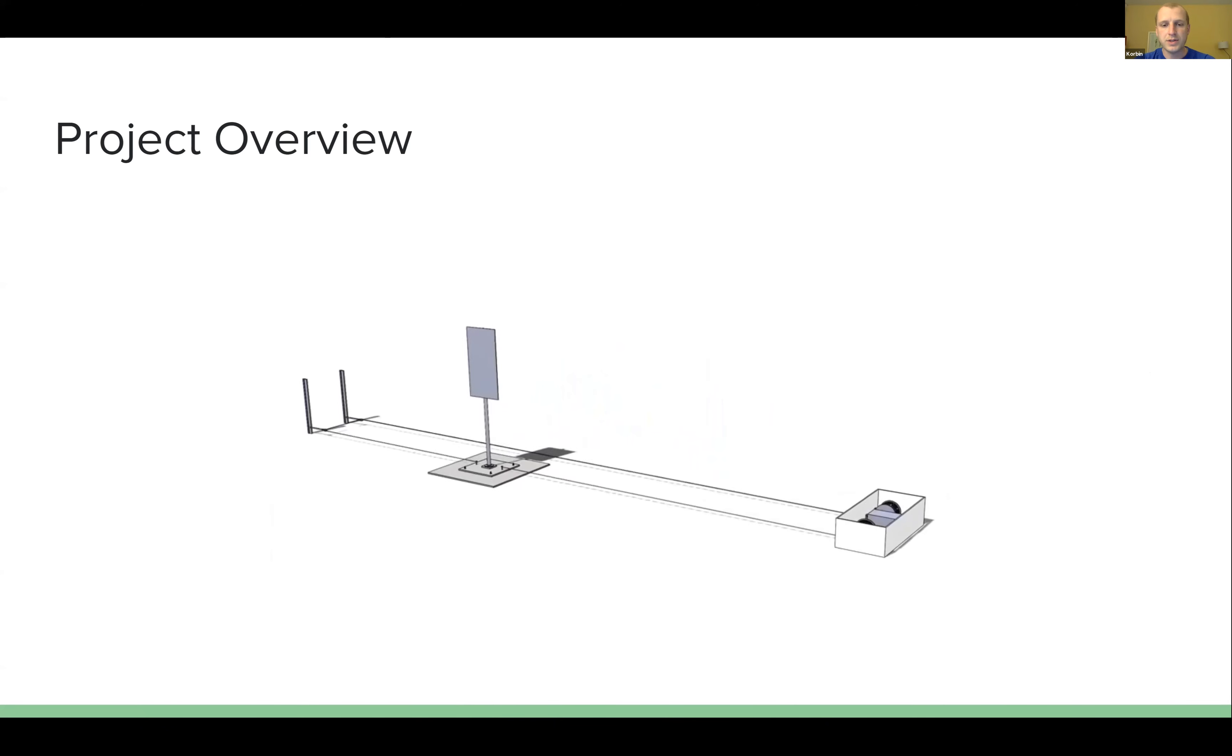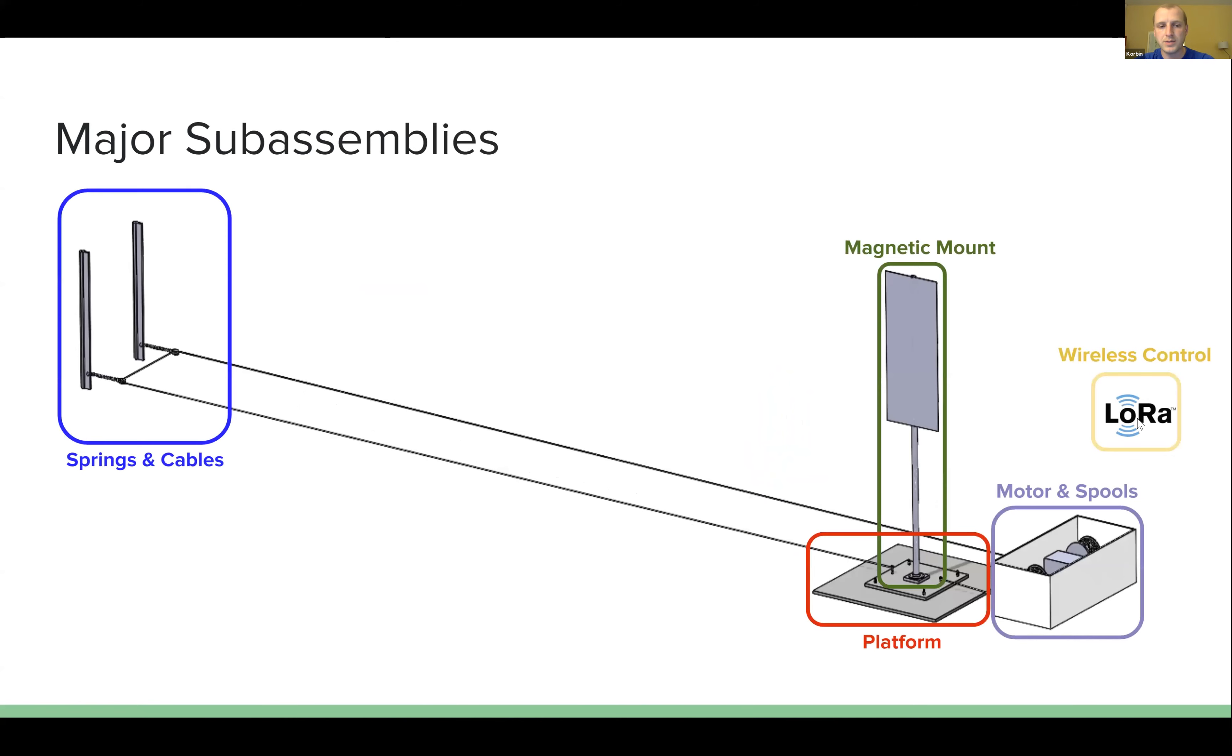So they'll be able to control it from the building anywhere on campus. That's the test dummy, and the five major subassemblies that we have for the test obstacle are the springs and cables, and then the platform carrying the test dummy, the magnetic mount which connects the test dummy to the platform, the motor spools and the housing unit, as well as everything being controlled wirelessly by LoRa.